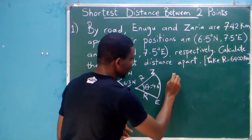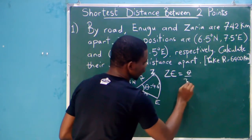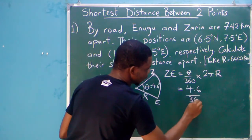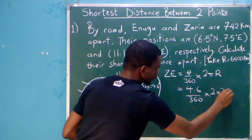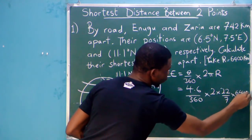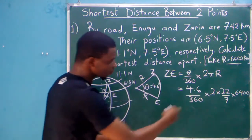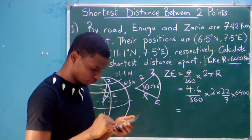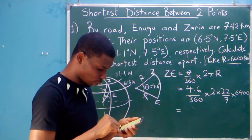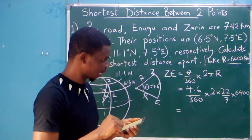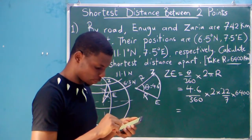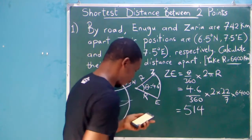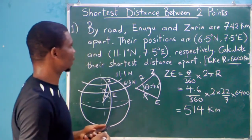It's now easy for us to calculate. ZE, the length of the arc, is theta over 360 times 2πr. Theta in this case is 4.6, over 360, times 2, times 22 over 7, and the radius is 6,400 kilometers. So: 4.6 ÷ 360 × 2 × 22 × 6,400 ÷ 7. That gives us 514 kilometers. That would be the shortest distance between Enugu and Zaria.